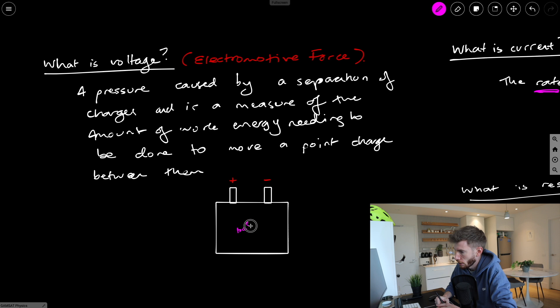So it's a measure of this pressure and the amount of work energy needed to be done to move a point charge between those two terminals. So if we draw here, this is just my rendition of a little battery here. Just draw that in battery. We've got the positive and the negative terminals. So again, relatively positive, relatively negative. If we were to try and move a charged particle like an electron, for example, between these two terminals, it's going to take a certain amount of energy to do that, and therefore a certain amount of work to do that.